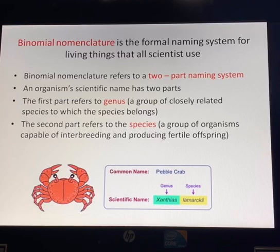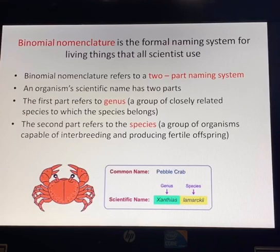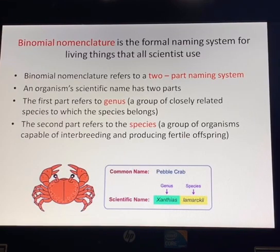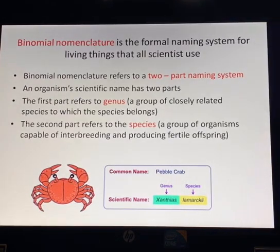This international system of naming is known as binomial nomenclature. Binomial — from the name — means two nominal parts. Nomenclature refers to a system of naming. So binomial nomenclature refers to a two-part naming system. An organism's scientific name has two parts.